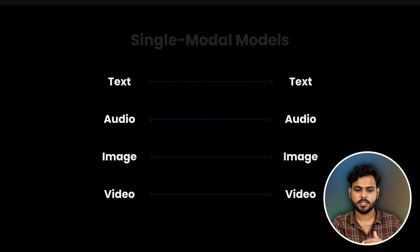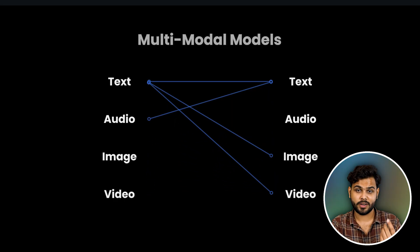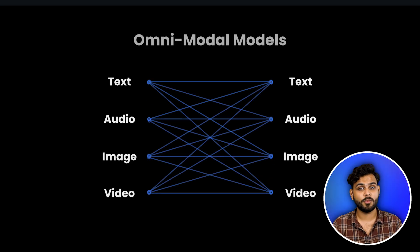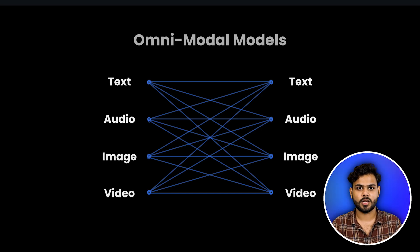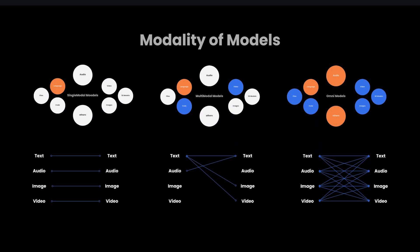So there are models in Generative AI that are single modality, multi-modal, and omni models. In a single model it's a one-to-one relation; in a multi-modal it's n-to-m; and in an omni model it's n-to-n. There are a lot of other terminologies we are going to discuss as we go ahead in the whole series.